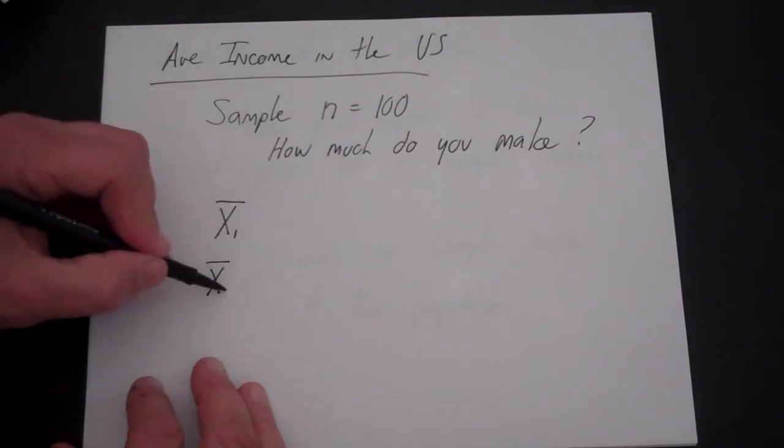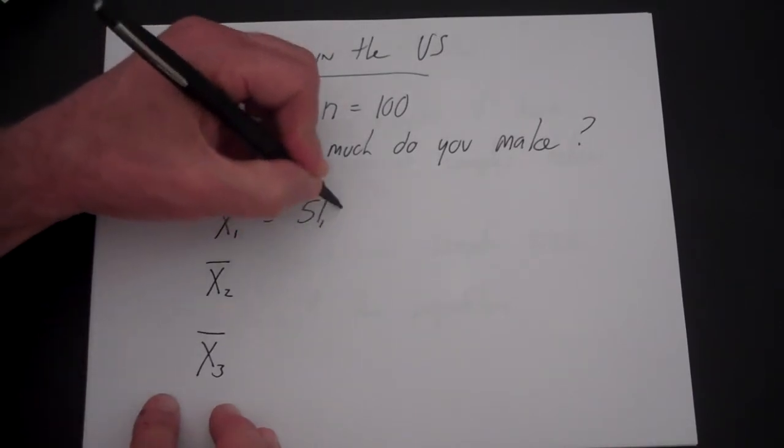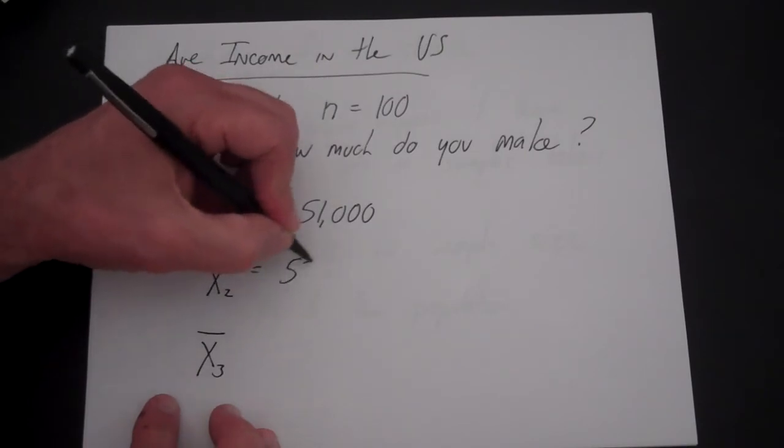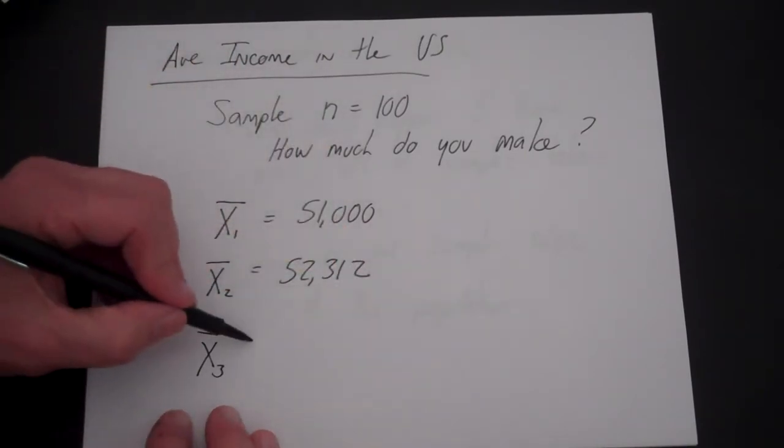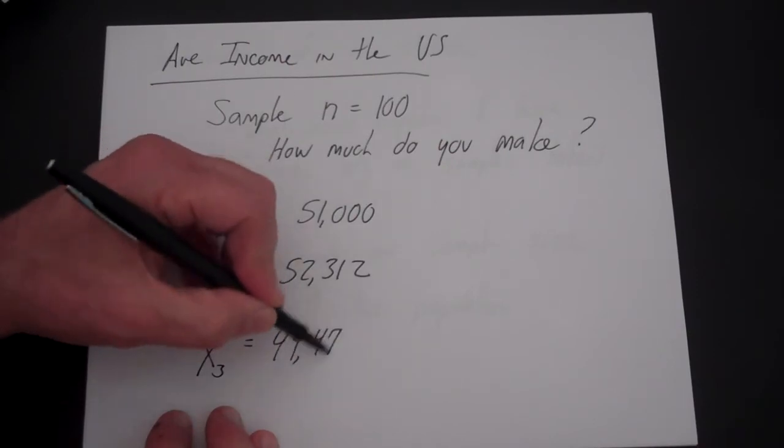Let's make some numbers up. Say the first time you got an answer of $51,000, the second time $52,312, and the third time $49,470.